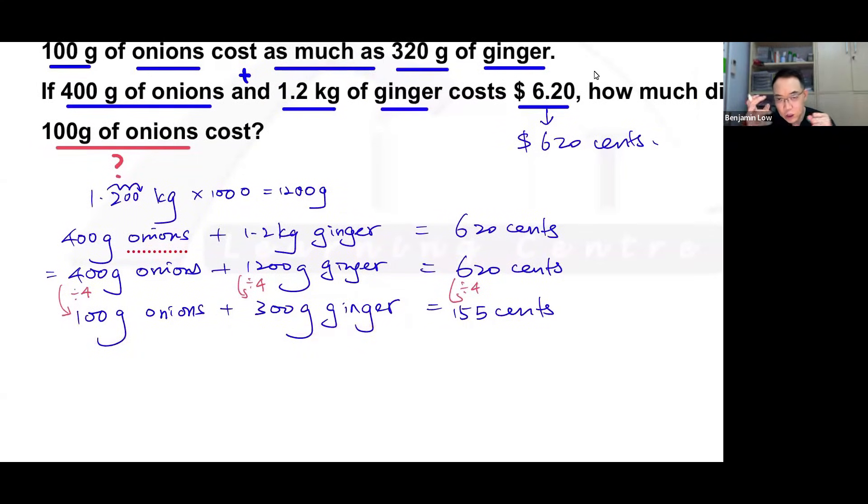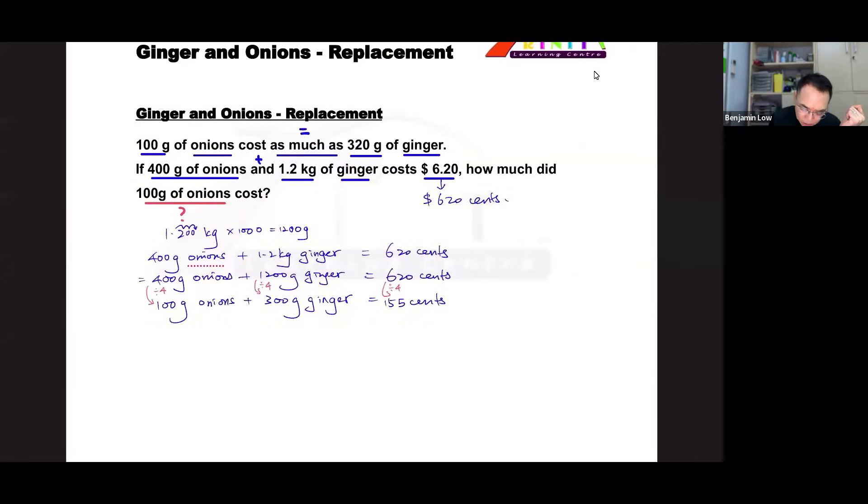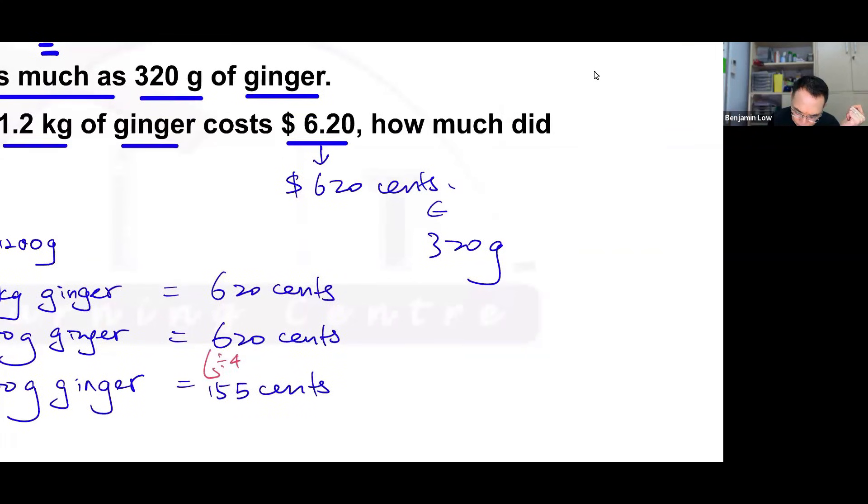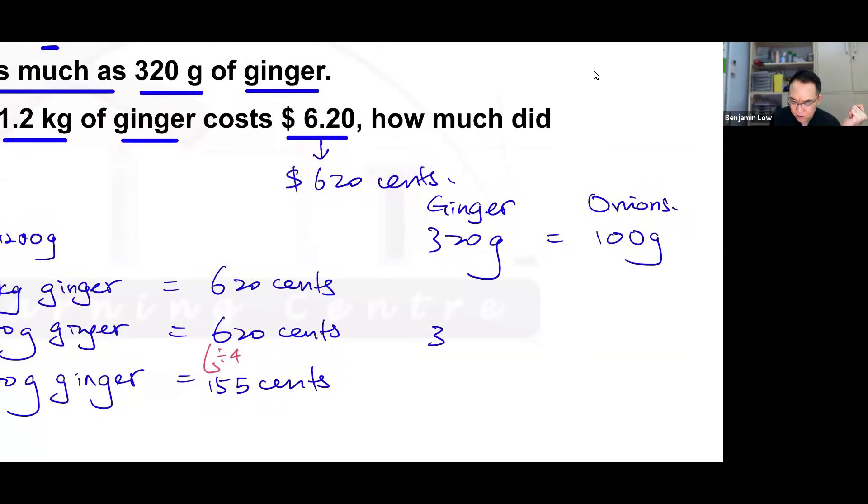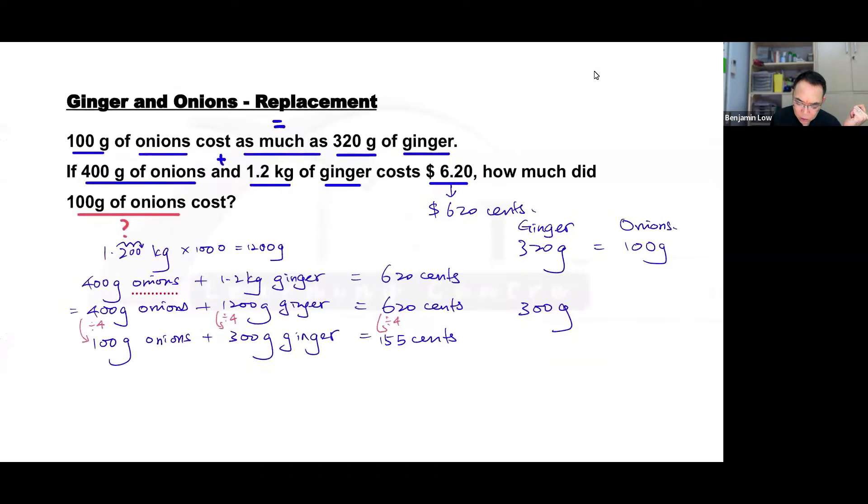Now I did say I'm going to change the ginger into onions, right? Because the question is about onions. So I'm going to make use of this information. I know that 320 grams of ginger will give me 100 grams of onions. They are equal. Now my goal is to get 300 grams because I need to know how much is this in the form of onions.